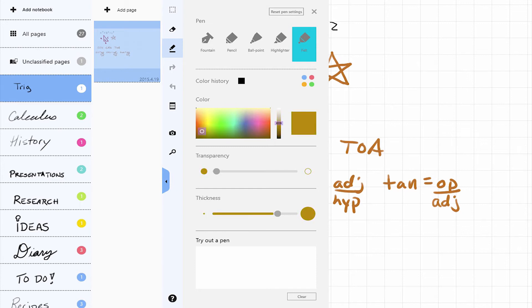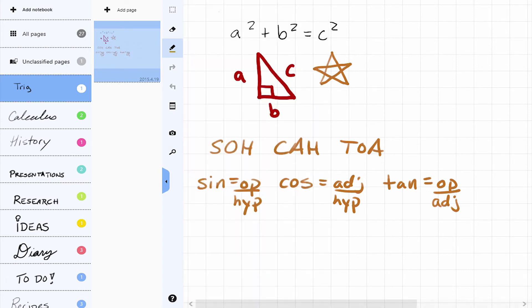After making some selections, you can test it in the box before settling on it. I think the line is too thick, so let me clear the box, adjust the thickness, and preview it again. Perfect. I'll tap the X and take notes with my new pen. That was pretty easy.